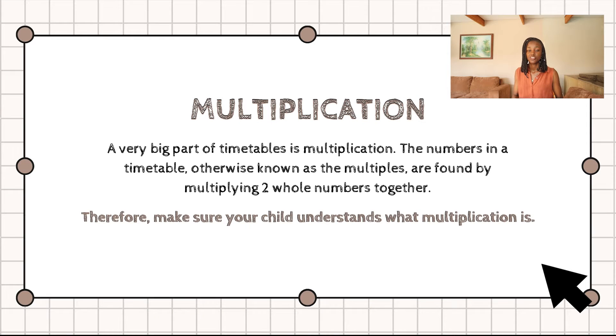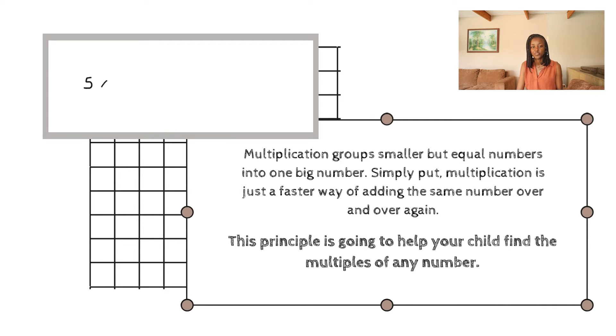Multiplication is a very big part of timetables because you find the numbers in the timetable — otherwise known as the multiples of a number — by multiplying two whole numbers together. So your first action should be making sure that your child understands what multiplication is. Multiplication groups smaller but equal numbers into one big group. Put simply, multiplication is a fast way of adding the same number over and over again. For example, 5 plus 5 plus 5 plus 5 gives you the exact same answer as 5 multiplied by 4, because multiplication is basically fast addition. Your child needs to understand this because it's exactly this principle that's going to help them find the multiples of any number.